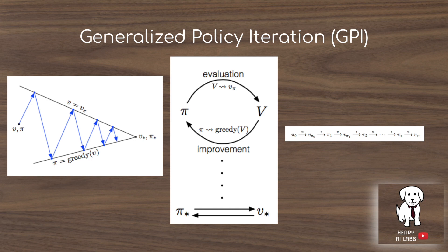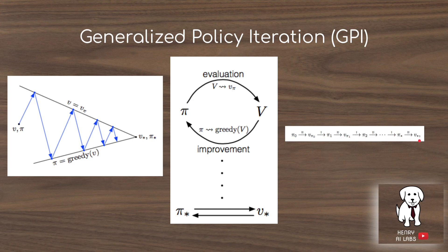Generalized policy iteration is an iterative approximation algorithm, one of the most popular classes of algorithms in computer science and machine learning. We randomly initialize our value function estimates of every state and start with a random policy. Then we evaluate the values of every state with respect to this random policy, and update our policy by making greedy action choices with respect to those value functions. The greedy action selection chooses the action which takes you to the state with the highest value estimate. This loops until it converges to the optimal value function and policy — evaluating, then improving, then repeating.